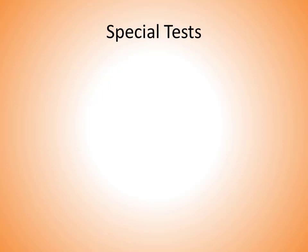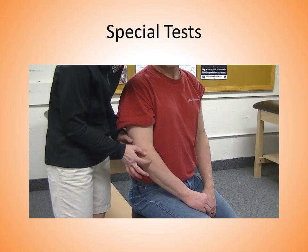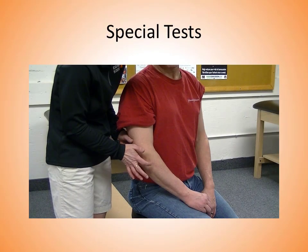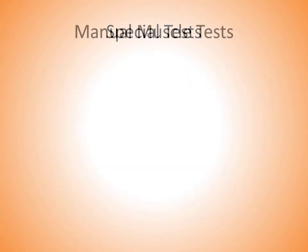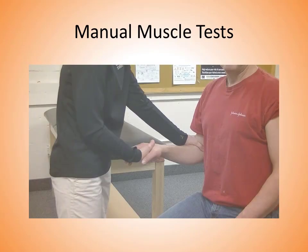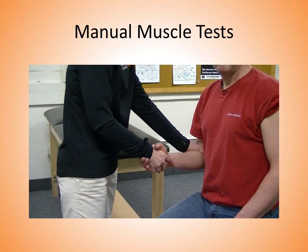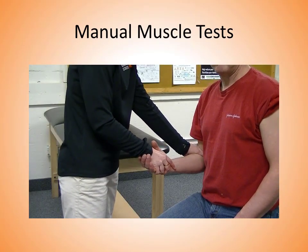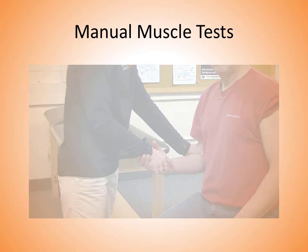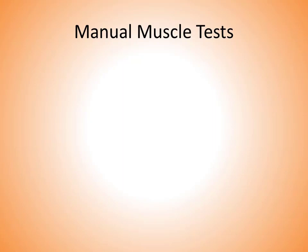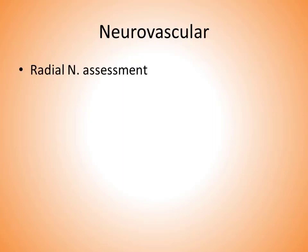The special test that will be performed is the Tinel's sign. During manual muscle testing, symptoms are reproduced with manual muscle tests of the supinators. During neurovascular testing, you want to perform a radial nerve assessment.